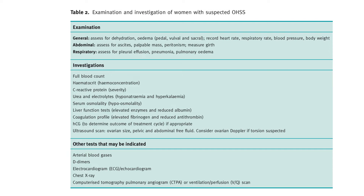On examination, you want to do a general examination and look for signs of dehydration and oedema. Record heart rate, respiratory rate, blood pressure, and body weight. Abdominally, assess for ascites, palpable masses, peritonism, and measure girth. Respiratory assessment should look for pleural effusion, pneumonia, and pulmonary oedema.